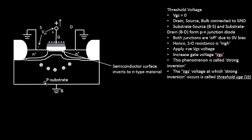The reason for bringing up PMOS here is to clarify the naming convention. The device names come from the type of channel formed: if it's an N-channel, it's called an N-channel MOSFET; if it's a P-channel, it's a P-channel MOSFET. Also note that for an NMOS the substrate is P-type, and for a PMOS the substrate is N-type.